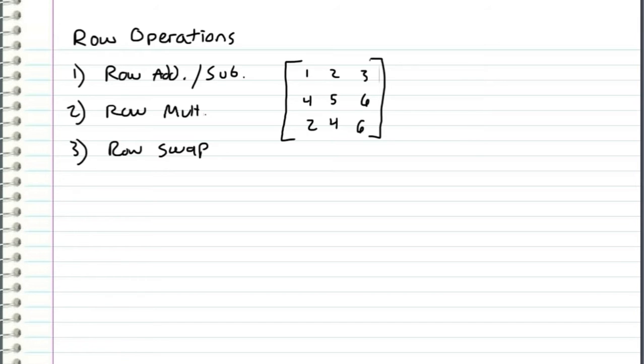There are three elementary row operations that we use. The first is row addition and subtraction. This just means that we can add or subtract any combination of another row from another row. The second one is row multiplication, which says that we can multiply any row by a number. And the third row operation is row swapping. This means that we can take any two rows and swap their positions or swap their order.